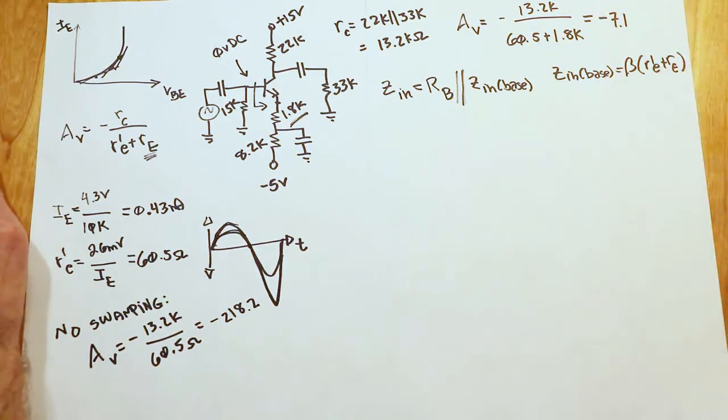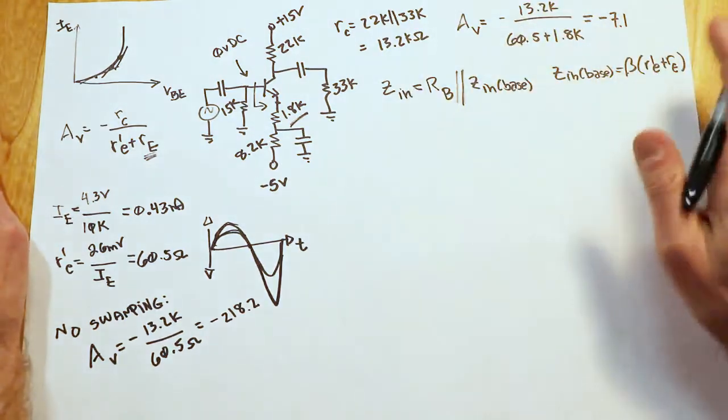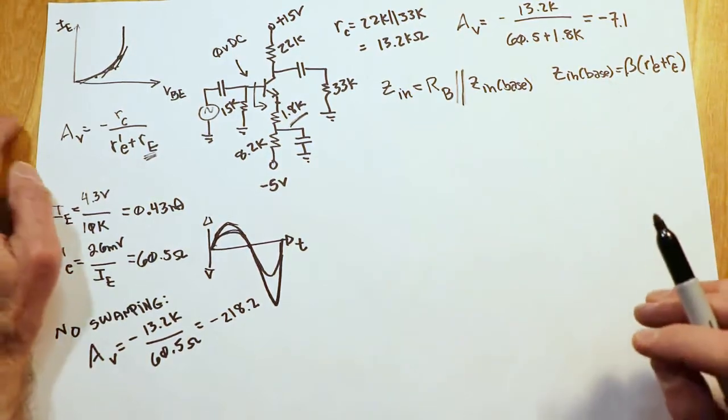End result, if we were to sacrifice, let's say, a factor of 30 on the gain, our input impedance will go up, but it probably won't go up by a factor of 30. It will, however, increase.